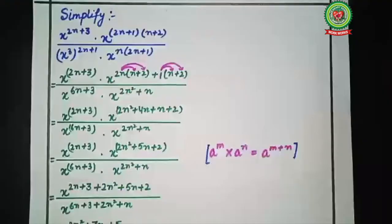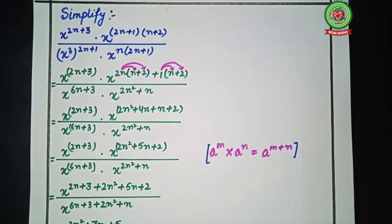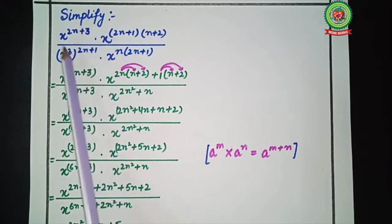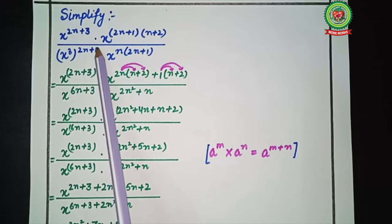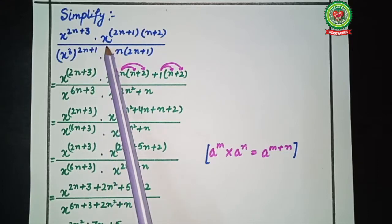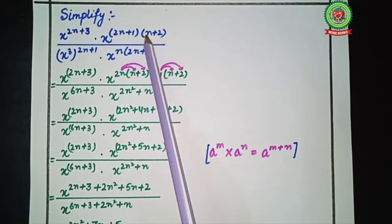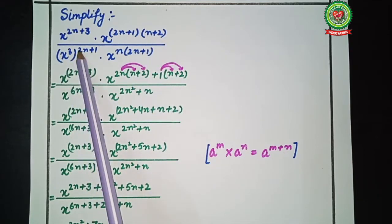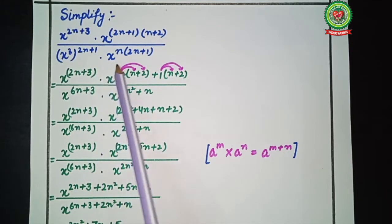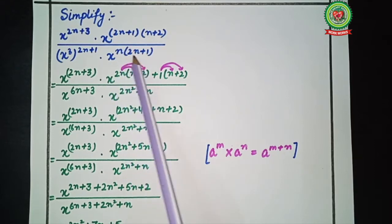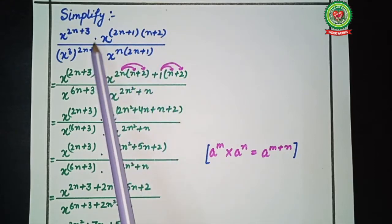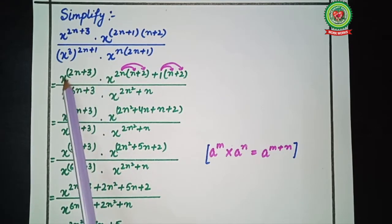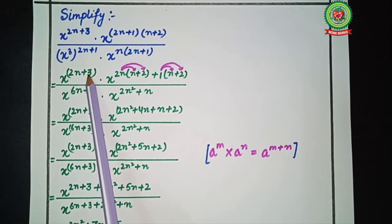Let's start with the first example. Read the statement first: simplify x raised to power 2n plus 3, multiplied by x raised to power 2n plus 1, bracket n plus 2, upon x raised to power 3, bracket 2n plus 1, dot x raised to power n, bracket 2n plus 1. Here, the dot refers to the multiplication sign.